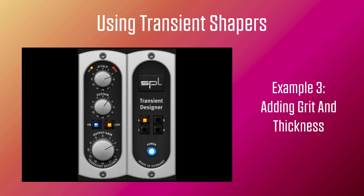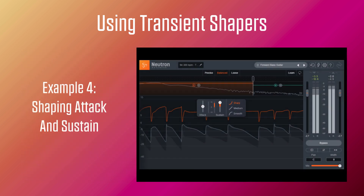In example 4, I use iZotope Neutron 3's transient shaper to tame an 808 bass line's attack transients and add sustain to the body, affording a more tonal bass sound than a percussive tonal kick. Here is the dry version. And now the processed version.